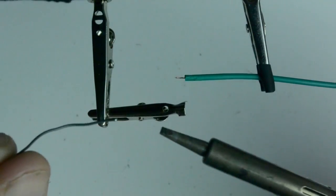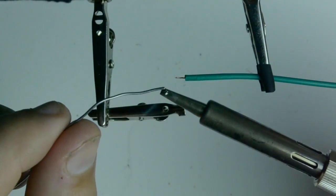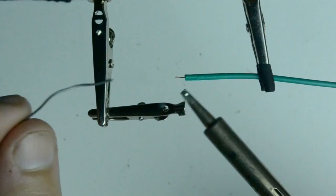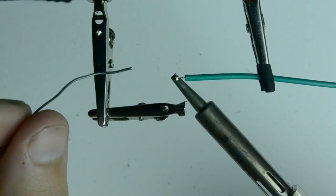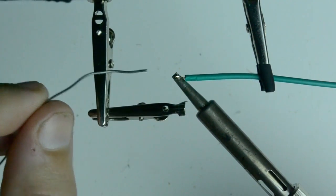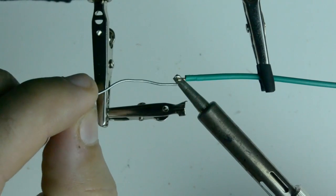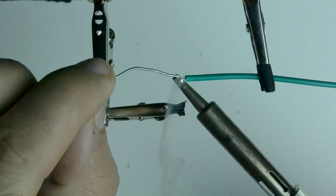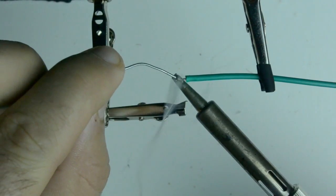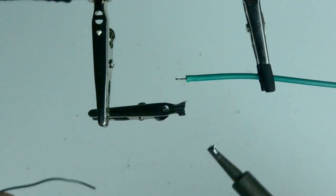So the first thing I'm going to do is just going to tin the tip of the iron to increase the heat conductivity. Put it underneath the wire here. And when the wire gets hot enough I'm going to feed some solder into the wire. And this will make it easier to solder later. It's called pre-tinning.